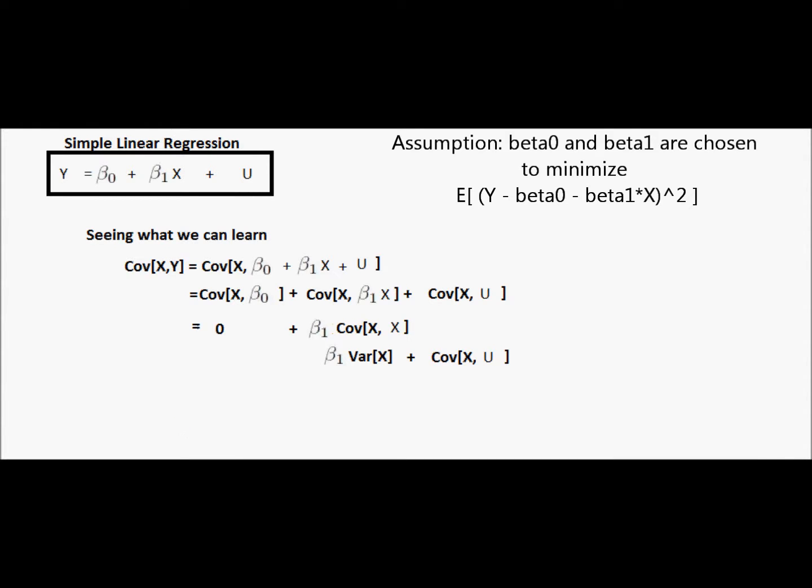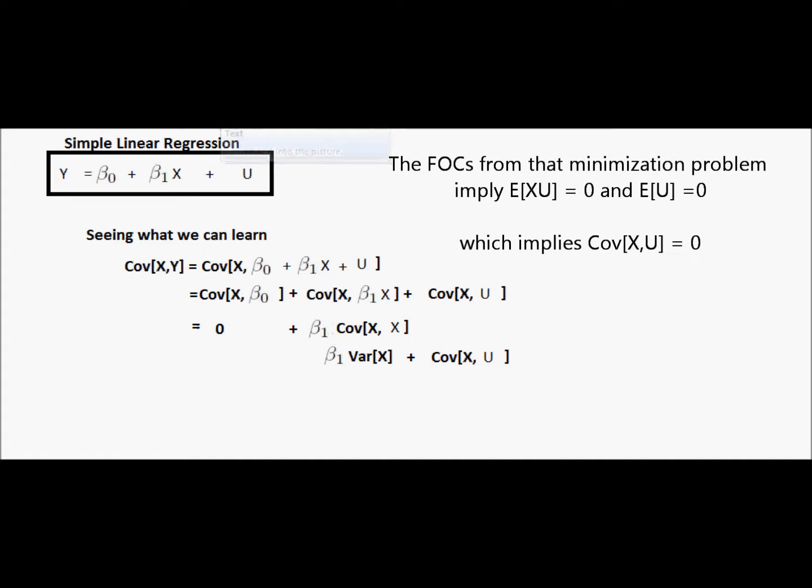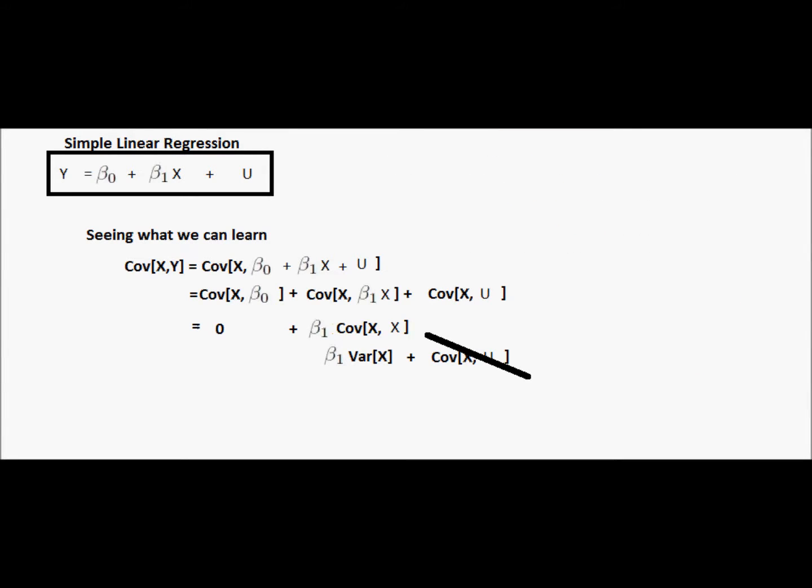Now it turns out that under this assumption that this regression is the best line that we could use just using only x as our variable to predict y, it turns out that that assumption implies that we get to strike out, or that assumption implies that covariance of x with u equals zero.